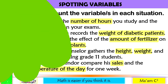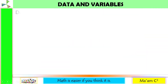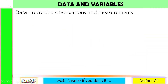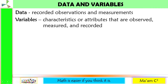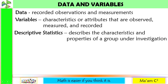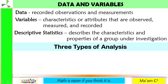Let us define some terms. Data are recorded observations and measurements. Variables are characteristics or attributes that are observed, measured, and recorded. When you describe a variable, you are using descriptive statistics. And in order to describe a variable, you need to analyze them.